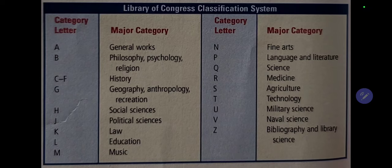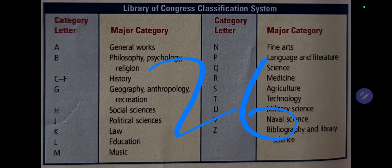But what about the Library of Congress system? The Library of Congress classification system is used mostly by larger libraries. The LC classification system divides all knowledge into 21 general categories — not 26, because the Library of Congress system doesn't use all the letters of the alphabet.